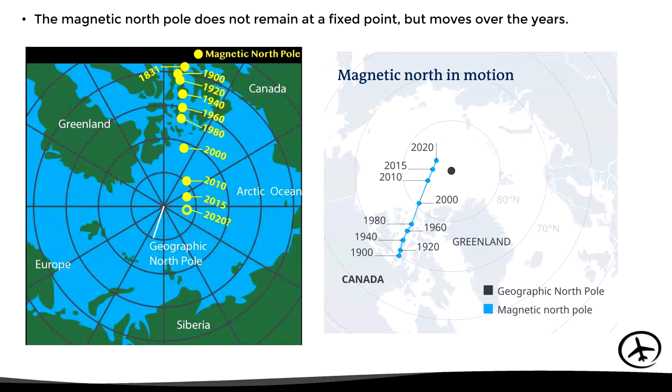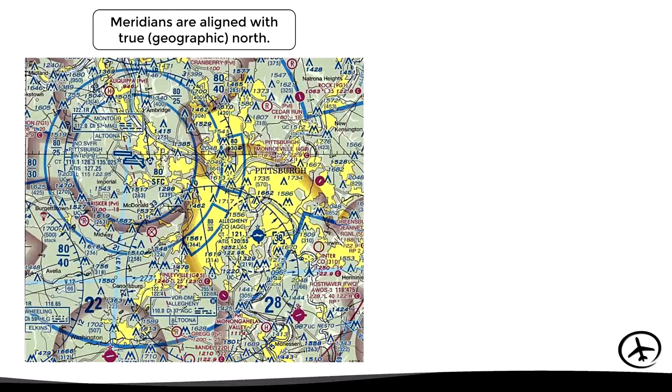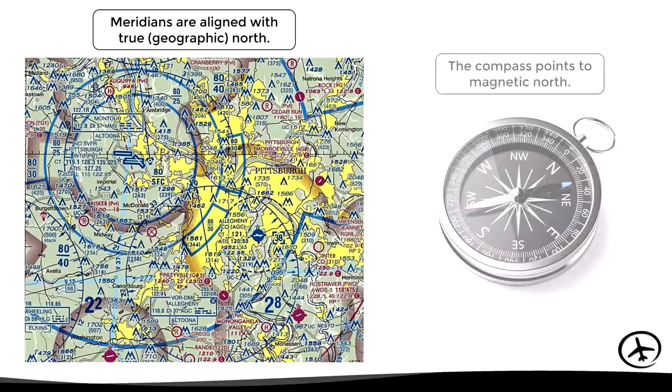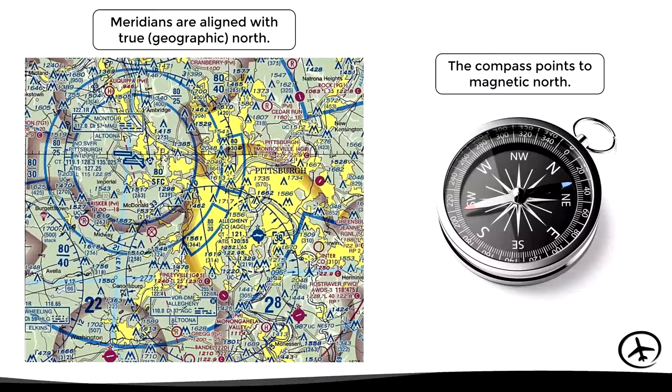This difference between the position of geographic and magnetic north results in some problems for navigation. Geographic north is used as a reference in navigation charts since it is the point where all meridians converge, and these are used to determine the course to be flown. The problem is that when flying we use a compass to follow the planned course, which points to magnetic north, not geographic north. We therefore have to correct the planned course according to the difference in position of the magnetic and geographic poles.